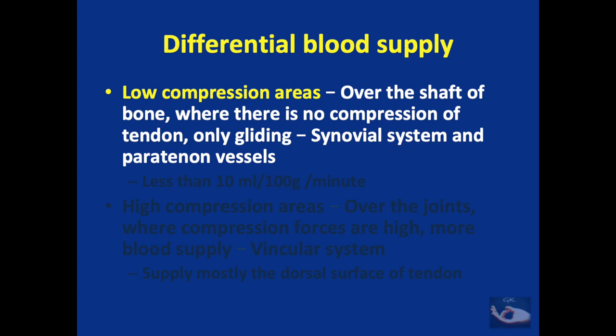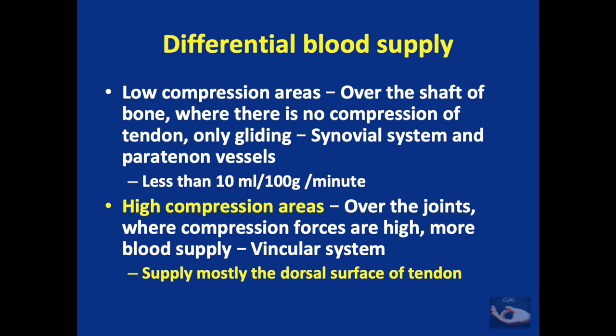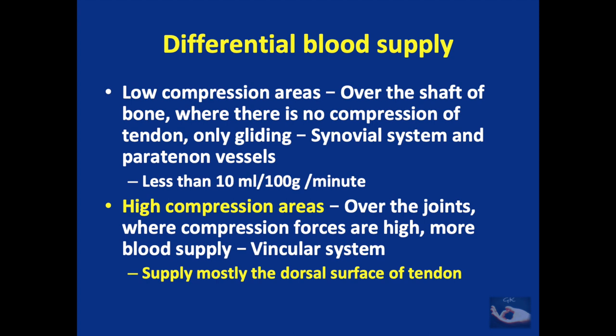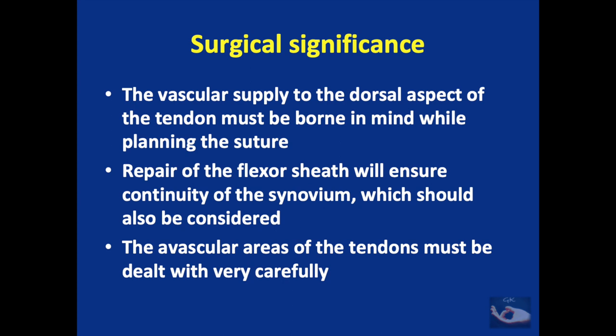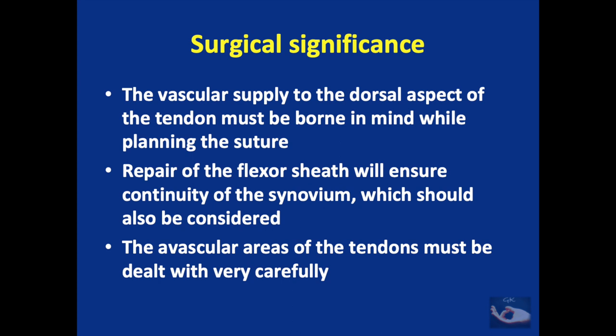The distribution of blood supply across the tendon is not uniform. In low compression areas over the shaft of the bone, where only gliding occurs, the synovial system and paratenon vessels are the only source of blood supply, and blood flow may be less than 10 ml per 100 grams per minute. In high compression areas over the joints, there is more blood supply through the vincular system, mostly through the dorsal surface. The avascular segments are the FDS beneath the A2 pulley at the proximal phalanx, the FDP beneath the A2 pulley, and the FDP beneath the A4 pulley. The vascular supply to the dorsal aspect must be borne in mind while planning the suture, and repair of the flexor sheath ensures continuity of the synovium.